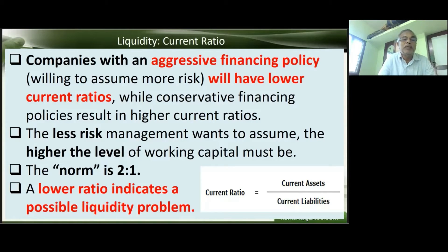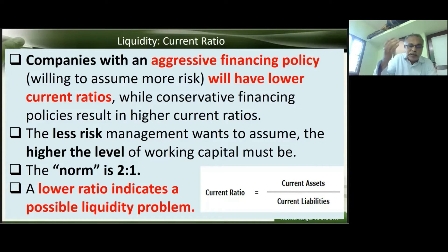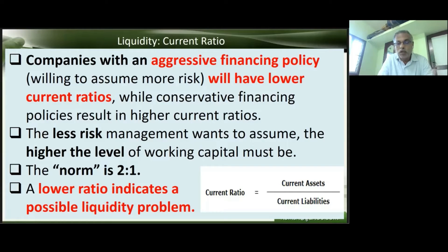When interpreting the current ratio: companies with aggressive financing policies will have lower current ratios; the norm is 2:1. A firm's current ratio should be proportional to its operating cycle — the shorter the operating cycle, the lower the current ratio can be, since the operating cycle generates new current assets more quickly. For example, inventory rotating monthly is better than a three-month cycle. Conservative financing policies result in a higher current ratio — maintaining two times the current liabilities. A lower ratio may indicate a possible liquidity problem.